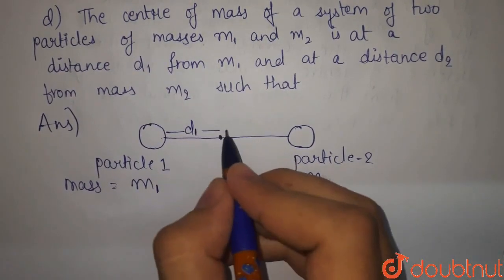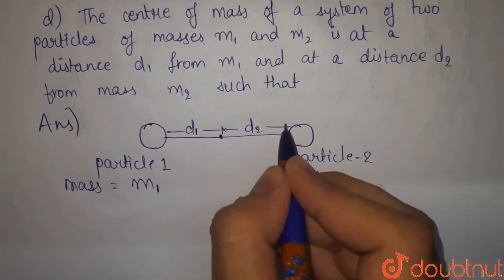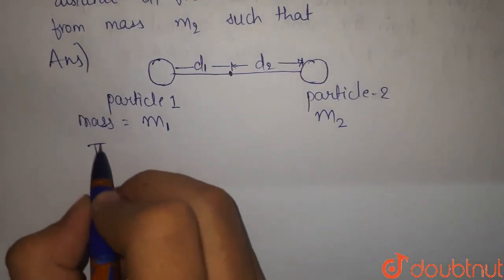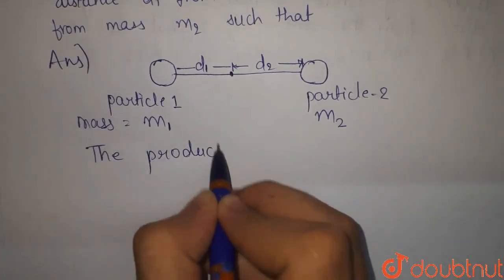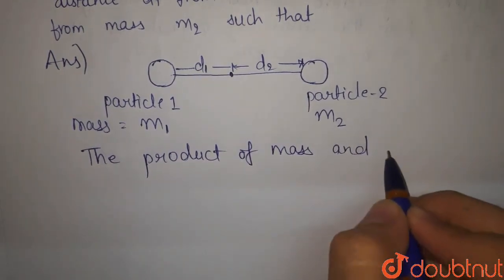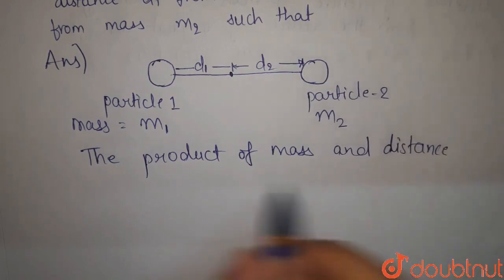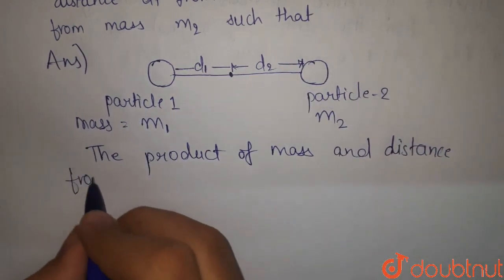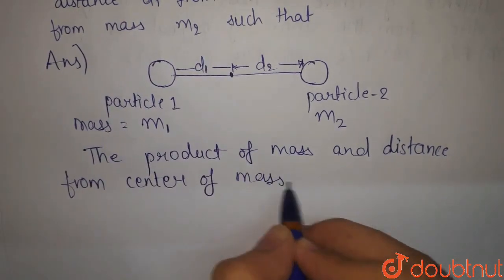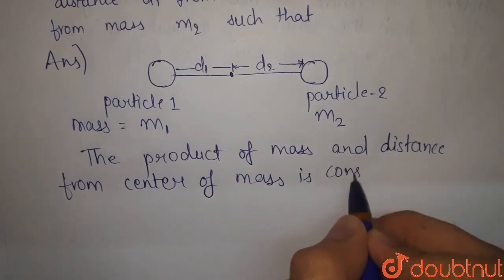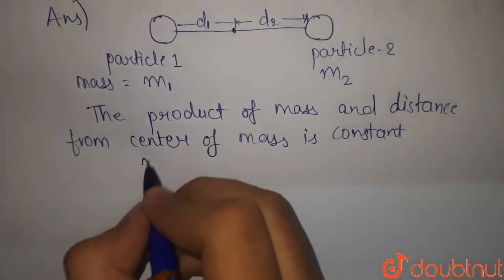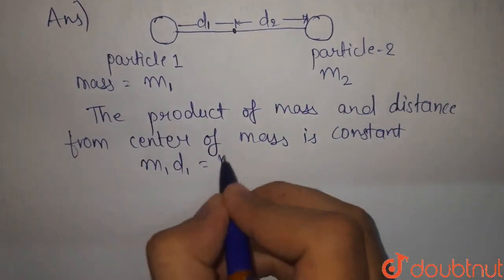D1, and from particle 2 this distance will be D2. Now we know that the product of mass and distance from center of mass is constant. Constant means M1 D1 equals M2 D2.